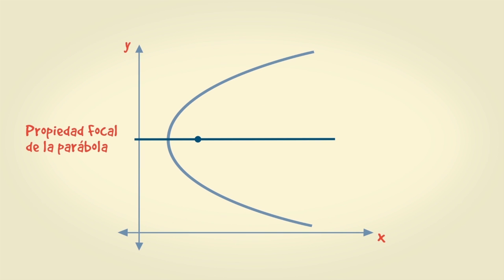Aplicaciones: La parábola tiene una importante propiedad focal basada en el siguiente teorema. La normal a la parábola, en un punto P cualquiera de la misma, forma ángulos iguales con el radio focal de P y la recta que pasa por este punto y es paralela al eje de la parábola. Dicho en otras palabras, el ángulo de incidencia es igual al ángulo de reflexión.